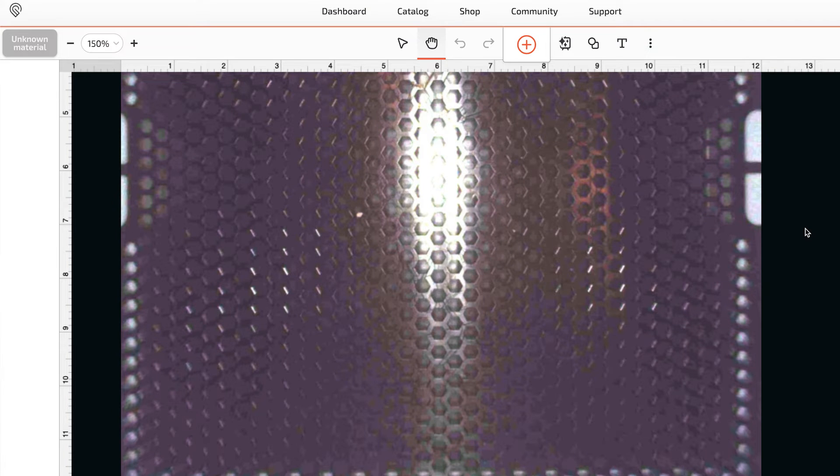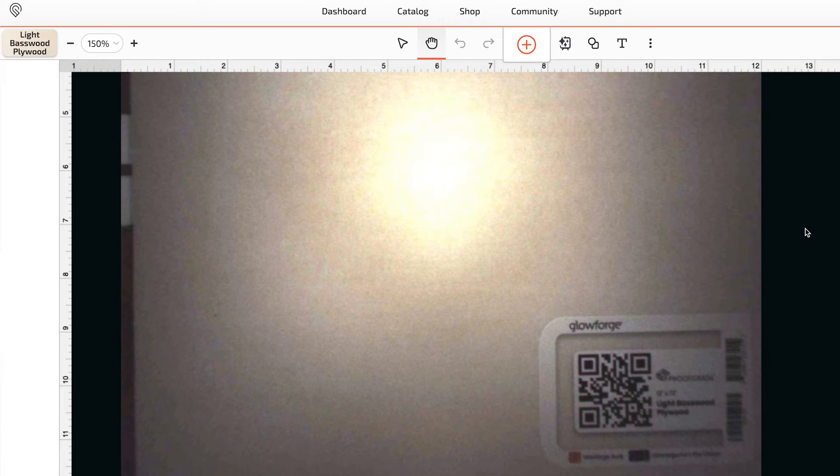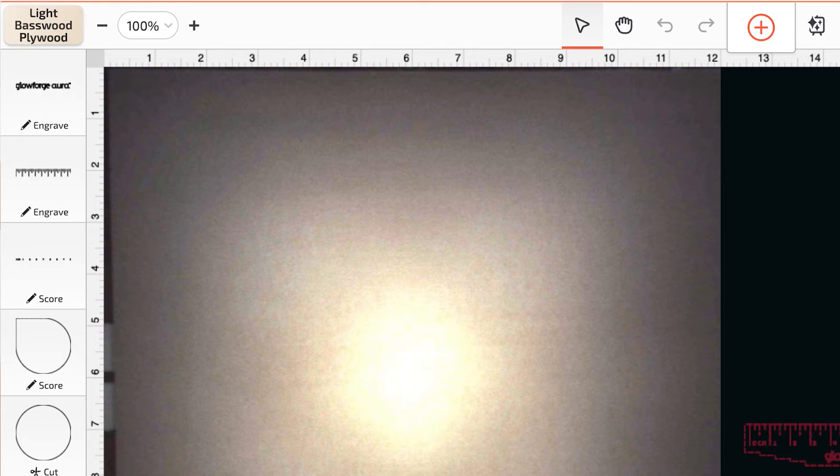Every time you open and close the lid your app workspace is going to refresh and it will show the material you just put into the printer. You'll see in this case that the app has automatically detected the type of material thanks to the QR code and it's loaded the right settings for a perfect print.